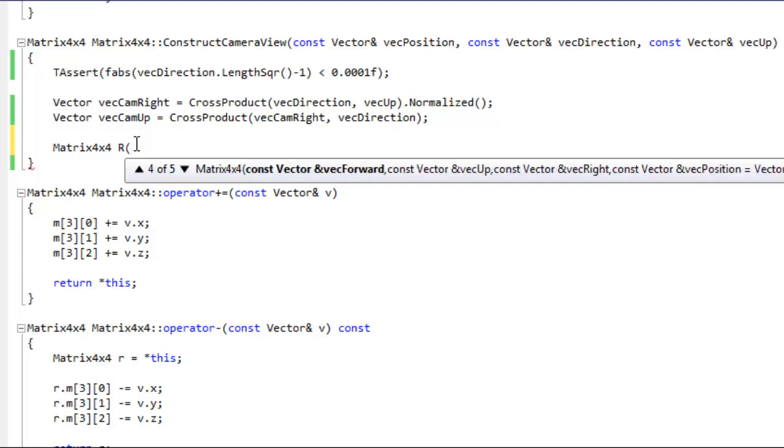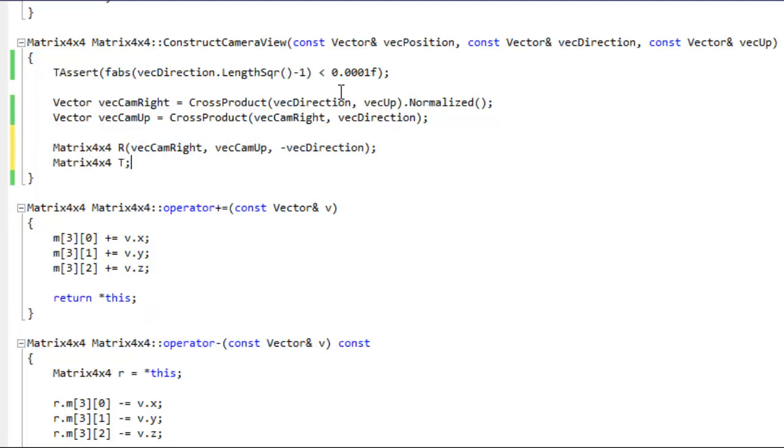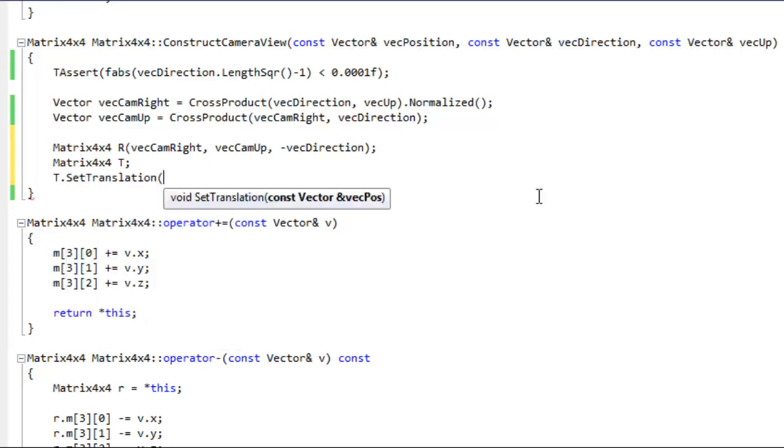Vec direction, except that, according to our formula, we're going to pass Vec cam right for forward, we're going to pass Vec cam up as normal for up, but for the right, we're going to pass negative Vec direction. That is directly from our formula. So, this will create the upper 3x3 matrix, and then we'll create one more matrix for translation, and we'll set the translation for that to the position of our camera.